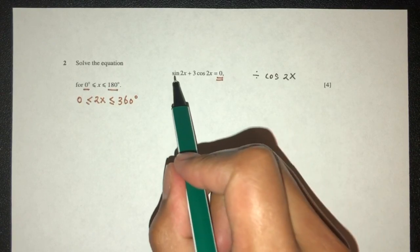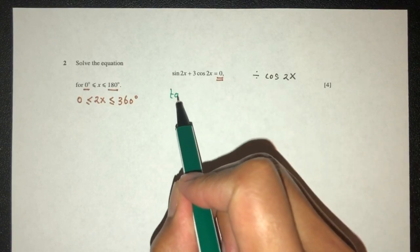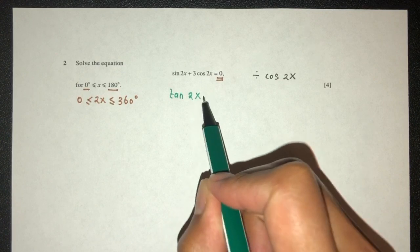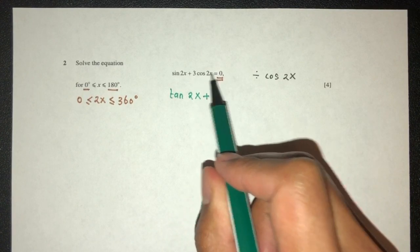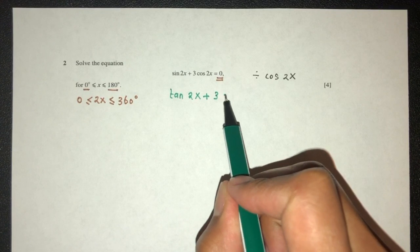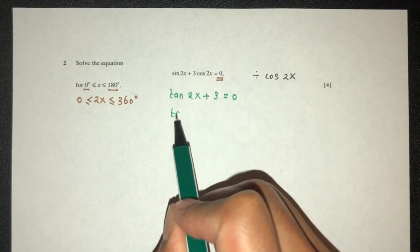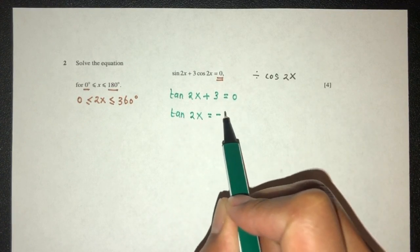So you will have sine over cos is tan 2x plus 3. That cos 2x divided by cos 2x will be 3 equal to 0. Now we have tan 2x is equal to minus 3.